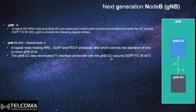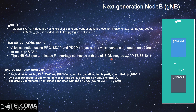The Distributed Unit handles the lower layers — specifically the RLC, MAC, and physical layers. The operation of the Distributed Unit is partly controlled by the Central Unit. It supports one or multiple cells, and it terminates the F1 interface which connects back to the Central Unit. With this new concept, the gNodeB is divided into these two parts.